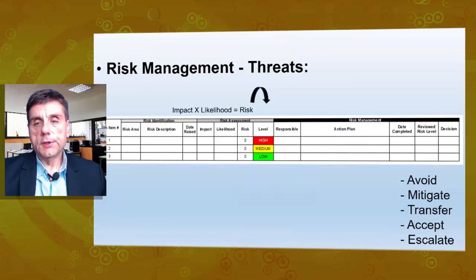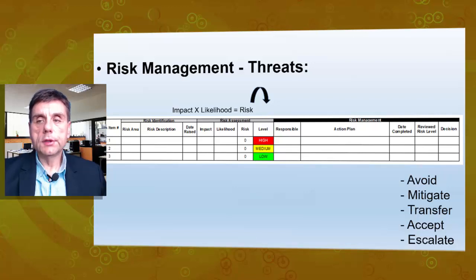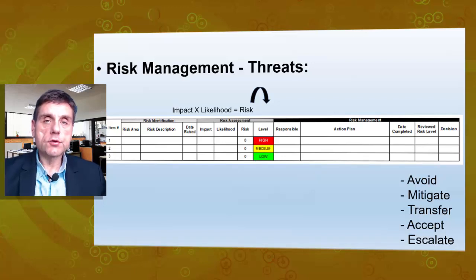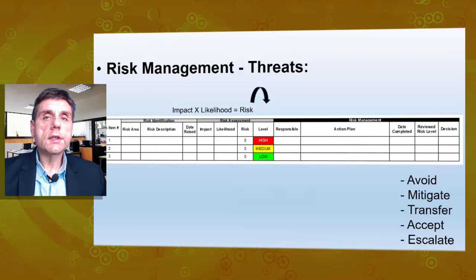Once we take action and do something about a risk, we have certain options available. We can avoid — completely stop doing something because it's too risky. We could mitigate — minimize the effect or the likelihood of the risk. We could transfer the risk by buying insurance or asking somebody to participate and help us. We could accept it if we're still willing to take the risk, or escalate if we don't have the resources to deal with it and need to bring it to a higher level of management or request additional resources.